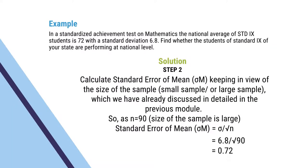Second step: calculation of standard error of mean, sigma m, keeping in view the size of the sample — whether it is a small sample or a large sample, which we have already discussed in the previous module. In the current example, our sample size is 90, so it is a large sample. Standard error of mean equals standard deviation divided by root of N, which is 6.8 divided by root of 90, equal to 0.72.